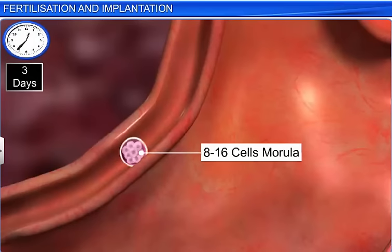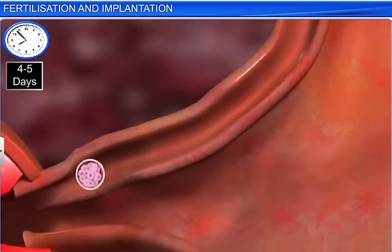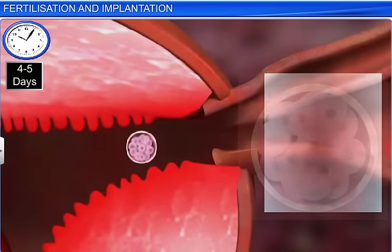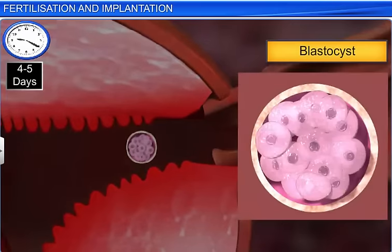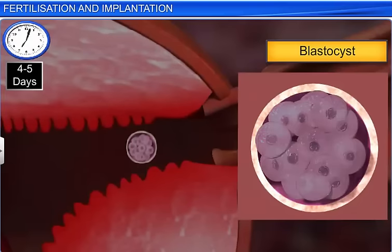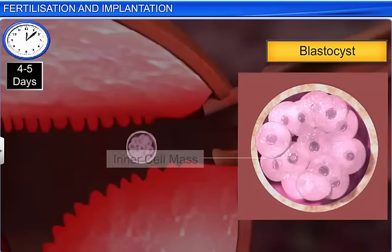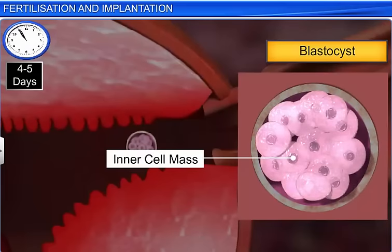Over a period of 2 days, the morula descends down into the uterus and transforms itself into a blastocyst — a hollow ball composed of about 100 blastomeres arranged in 2 layers. The outer layer, called the trophoblast, eventually gives rise to the placenta, while the inner layer, consisting of a group of cells called the inner cell mass, eventually differentiates to form the embryo.